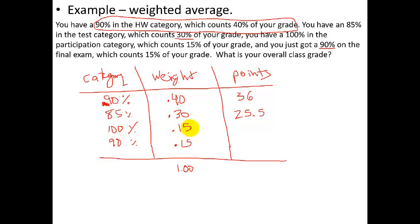85 times .3, 25.5, and 100 times .15 is 15, and 90 times .15 is 13.5.